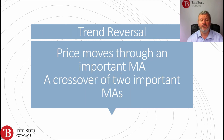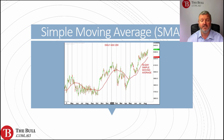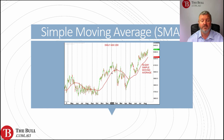Trend reversal as a use for moving averages: price moves through an important moving average, or there may be a crossover of two separate important moving averages. When the market was previously in an uptrend and the market breaks down through the moving average, we see this as a trend reversal — the uptrend is no longer intact. The break below the simple moving average signals a reversal of trend, with the market shifting from being bullish to potentially more bearish.